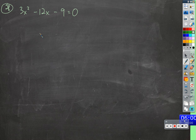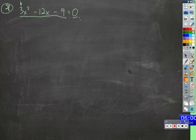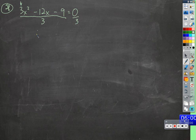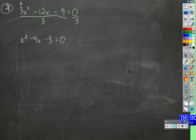We're not really able to do this with a leading coefficient other than one. So let's divide everything by that number so that it cancels out to give us a one. We'll divide everything by three on both sides — divide this by three, divide this by three, divide this by three. Zero divided by three is zero.